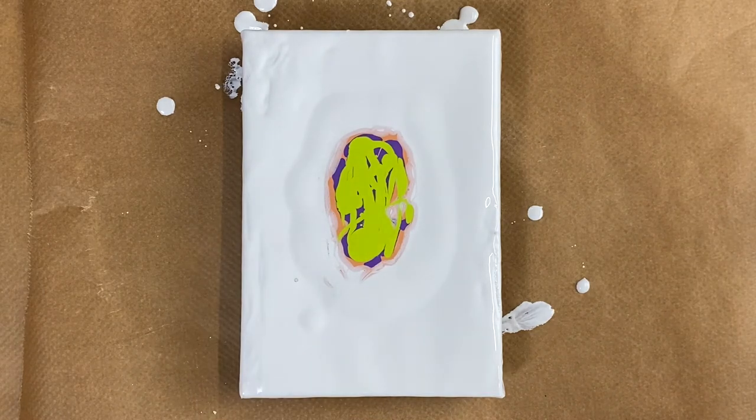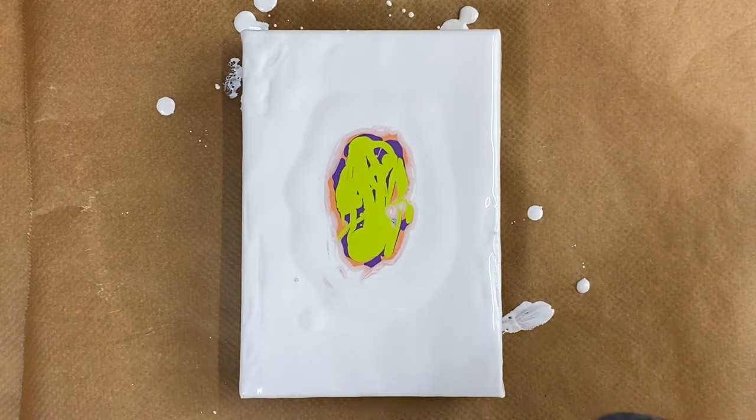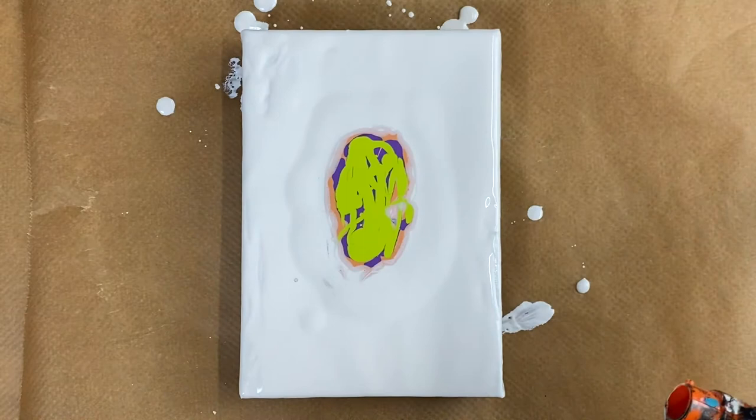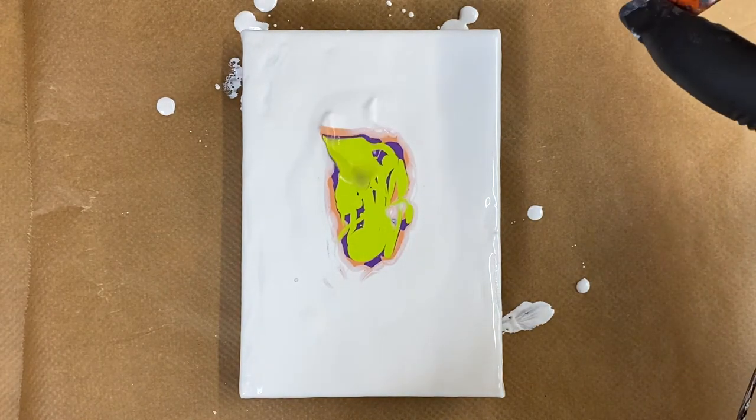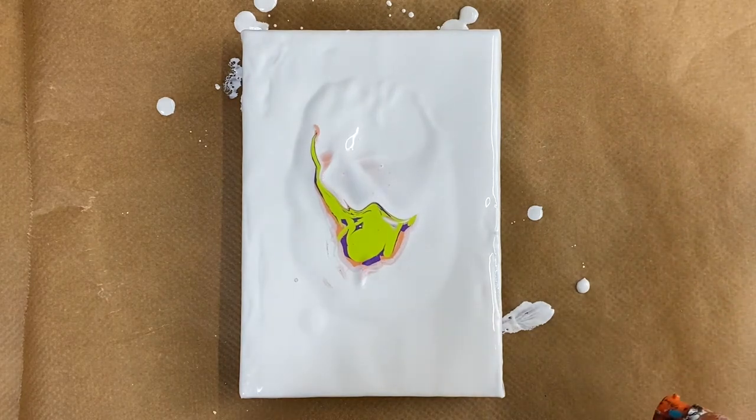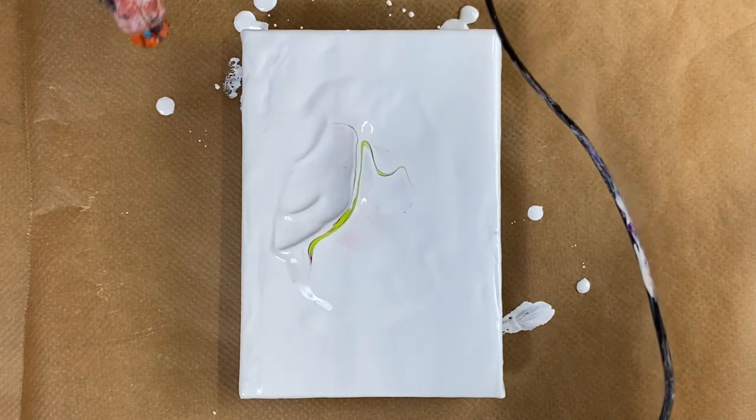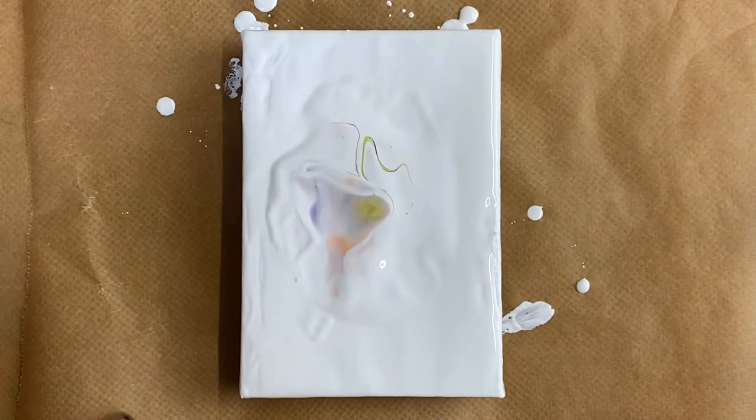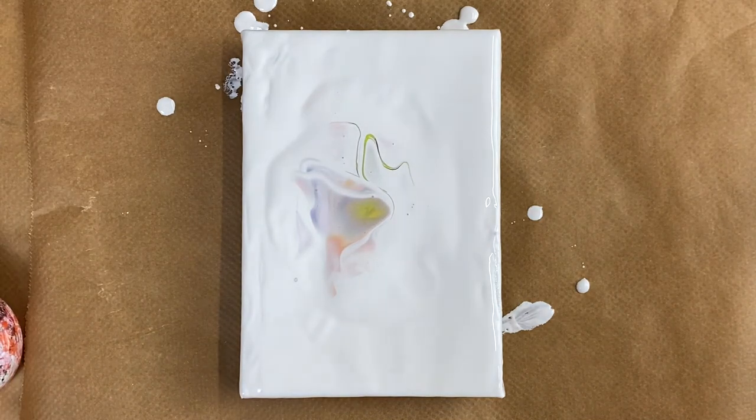Now I'm going to get my little blower. I don't use my big hair dryer for this because it's such a small canvas. I just use my little mini blower and blow that white paint over the top. I'll have a quick torch.